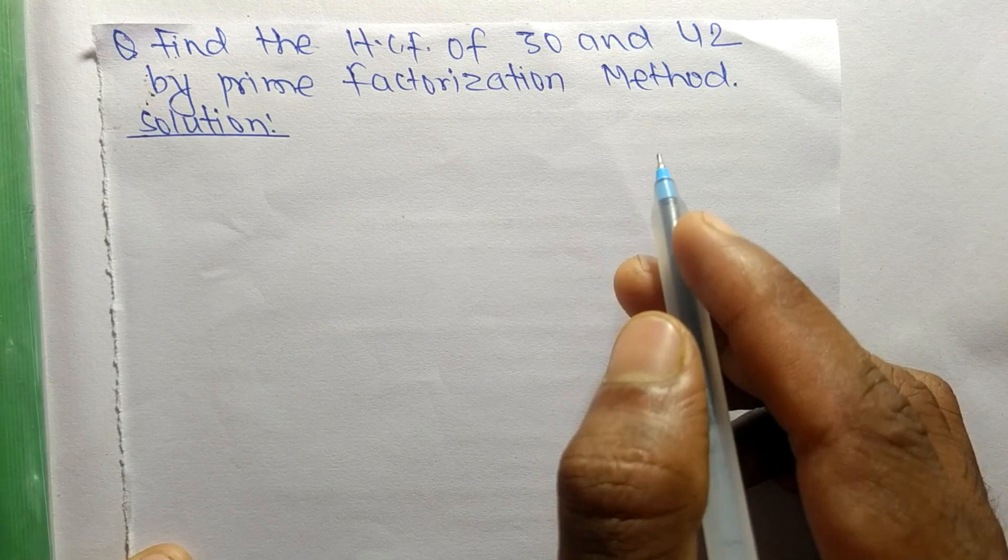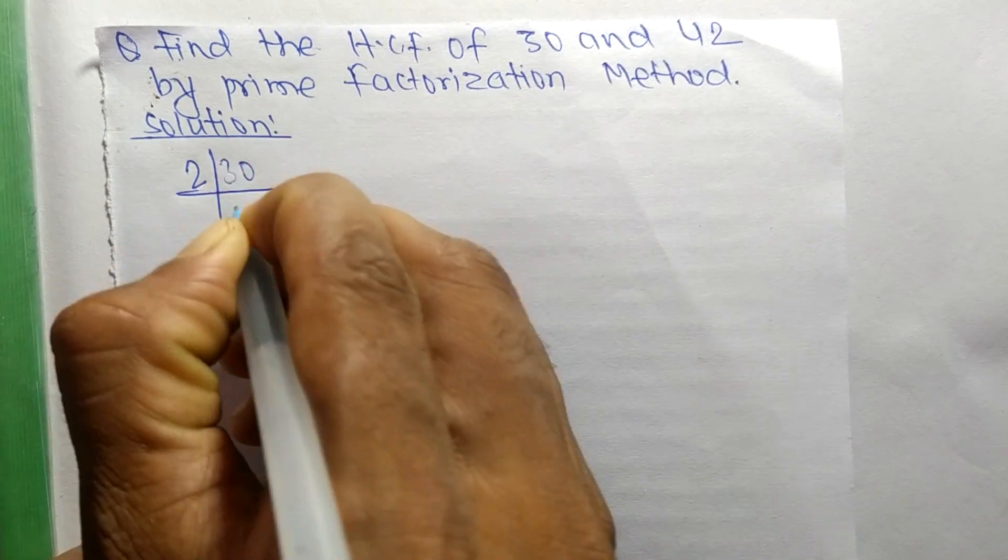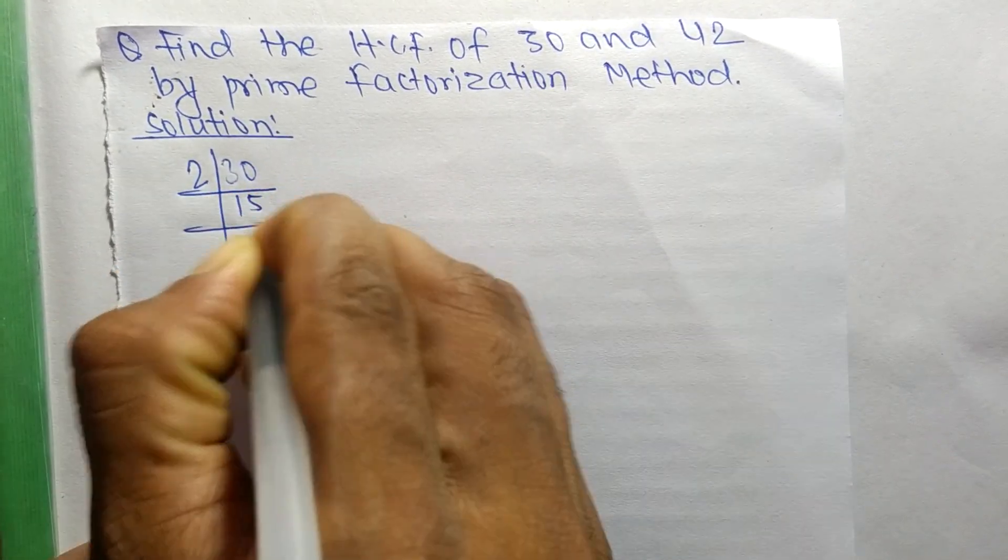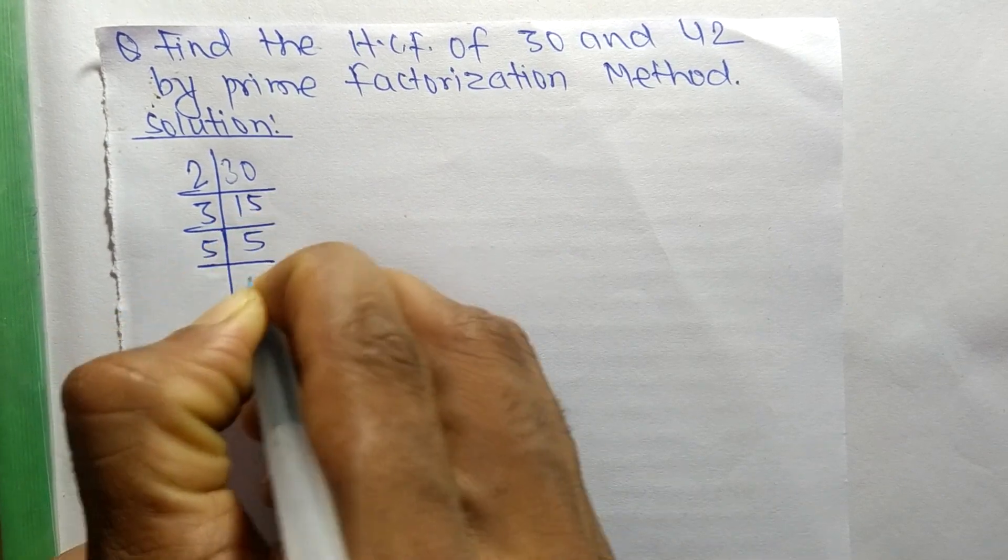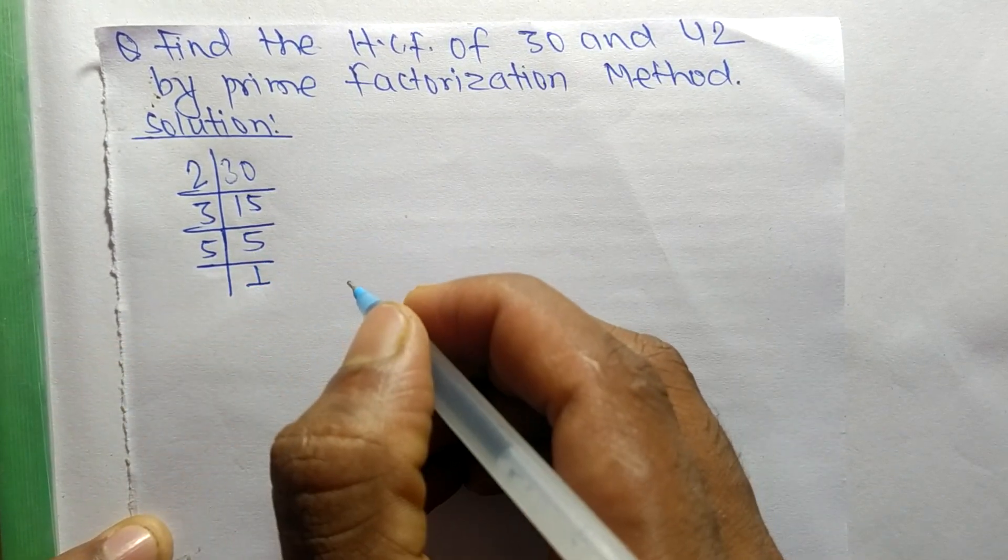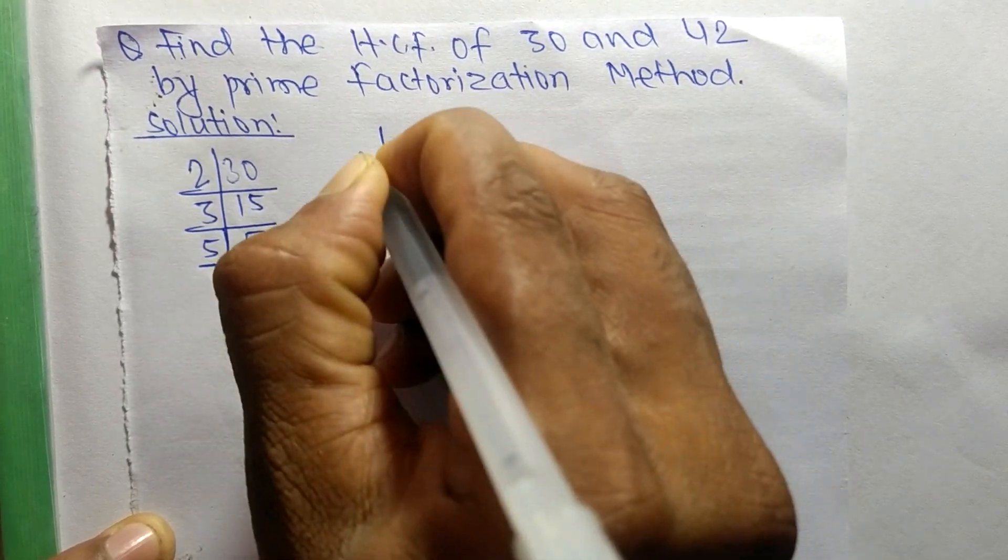So first we find out the prime factors of 30. It is 2 times 15 means 30, 3 times 5 means 15, and 5 times 1 means 5. Like this, the prime factors of 42 are...